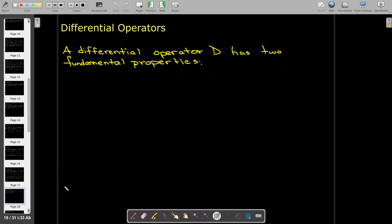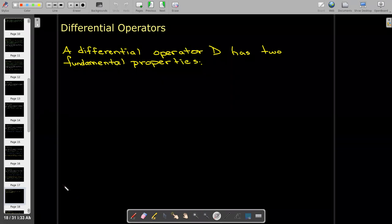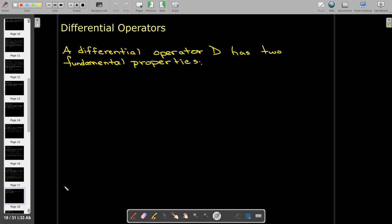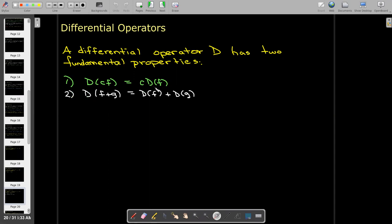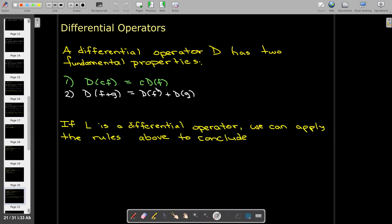Now there's two fundamental properties that any differential operator will have. For the differential operators, it just comes from the properties of derivatives. An important property is that you can factor out a constant multiplier. And if you take the derivative of the sum, that's going to be the sum of the derivatives. And this is true not only for D, but for any differential operator.